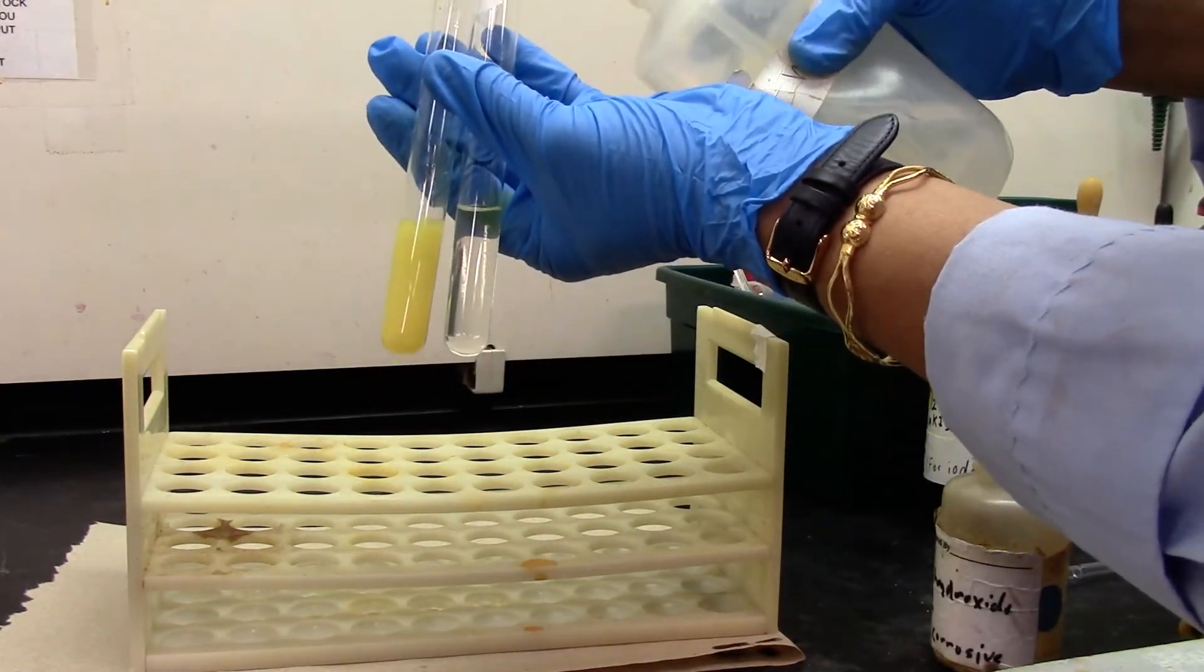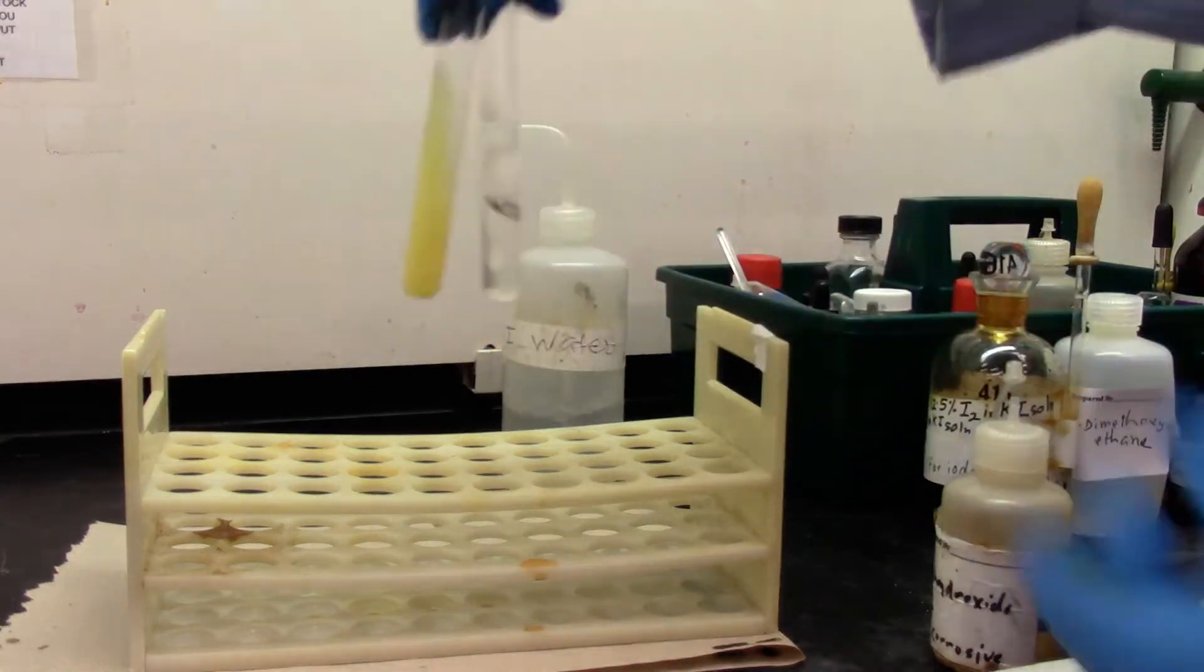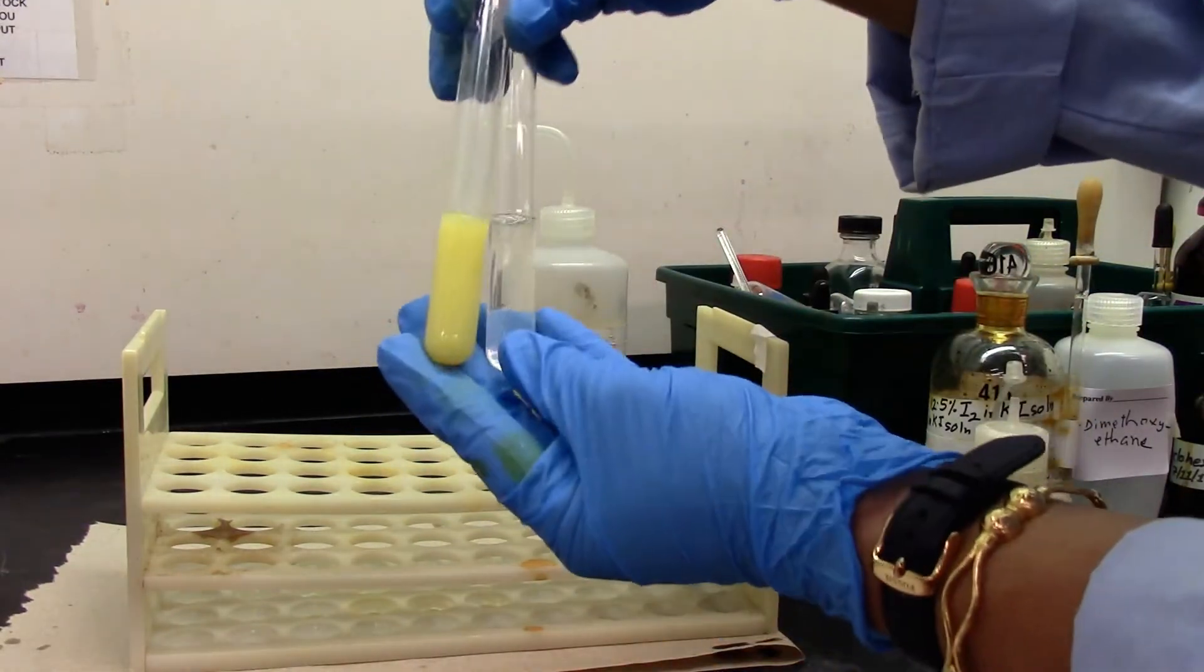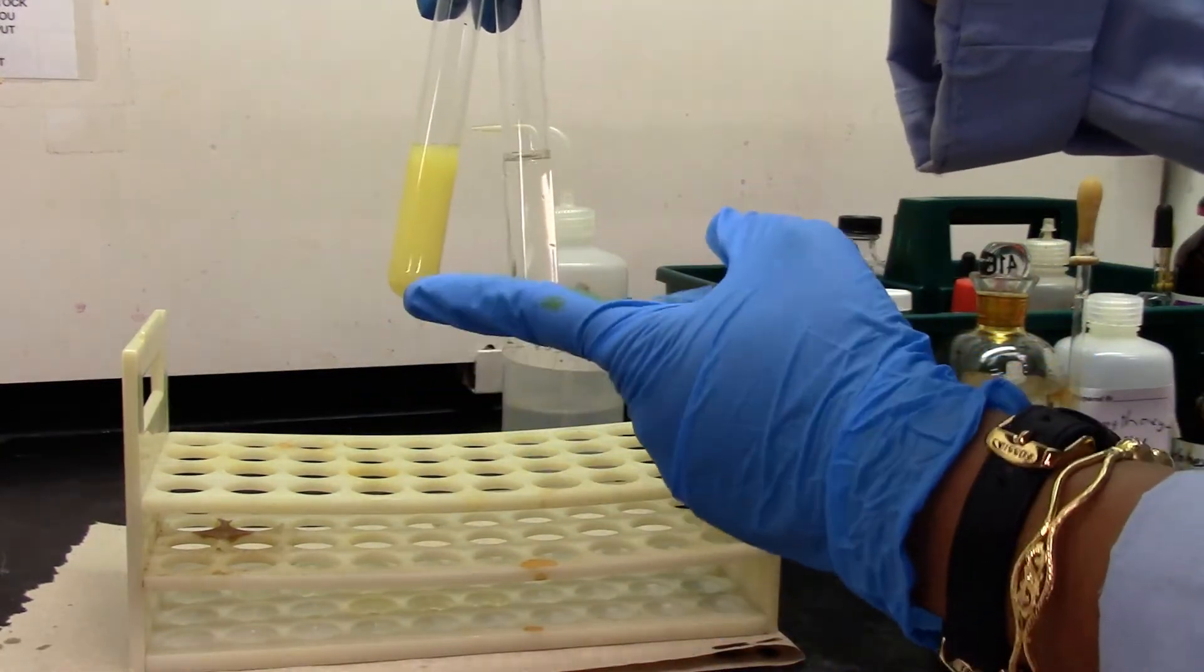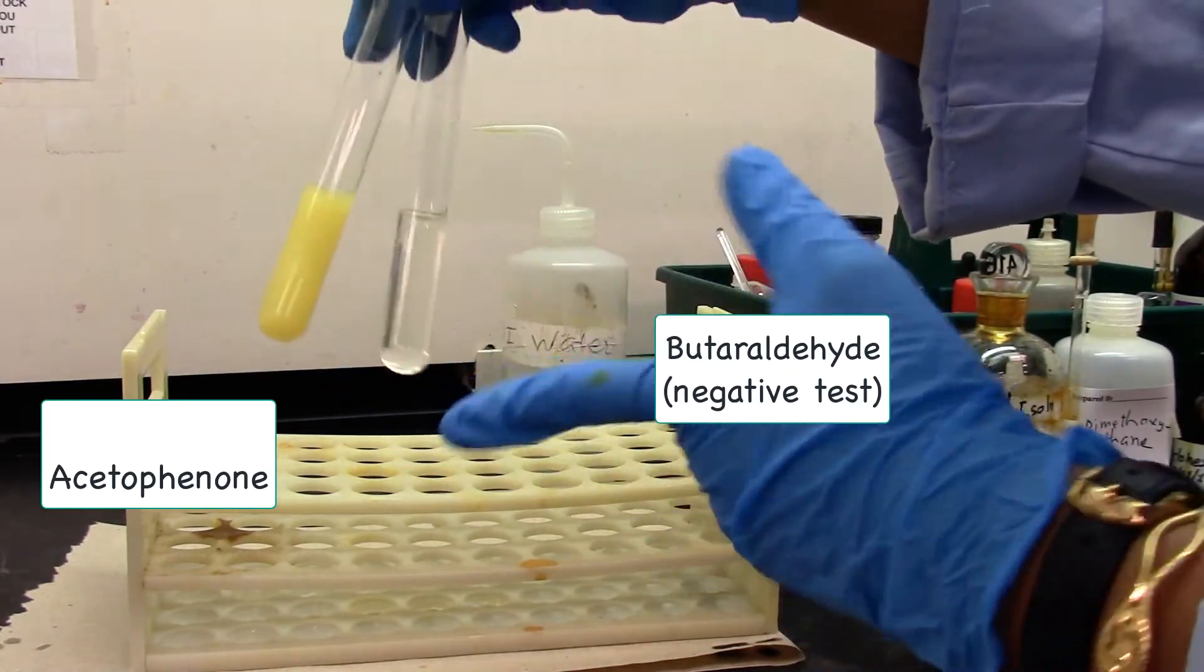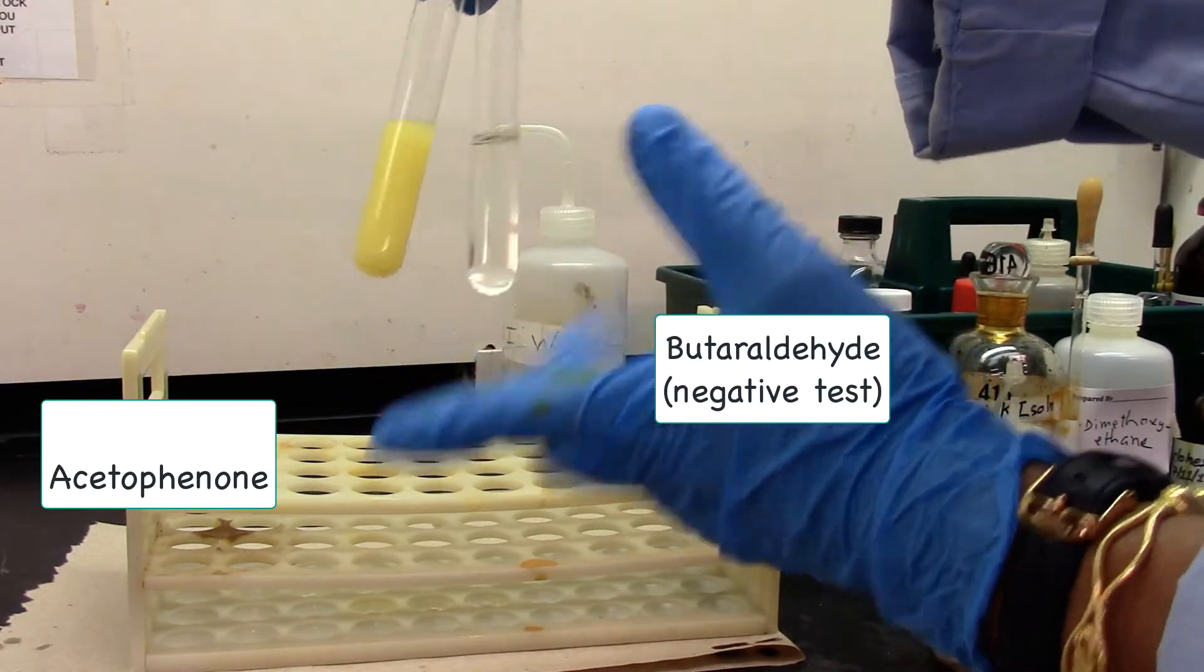That's my negative test. Add a little bit more water. This definitely looks like a cloudy precipitate, yellow cloudy precipitate. This is clear, that's the negative test.